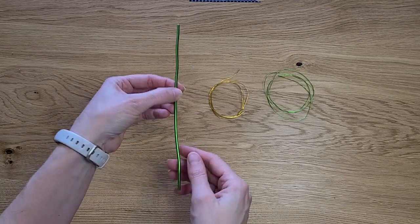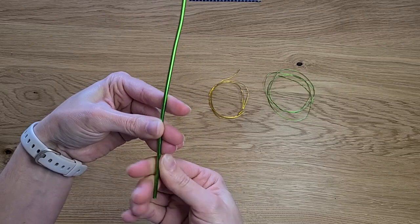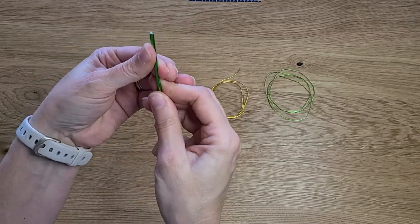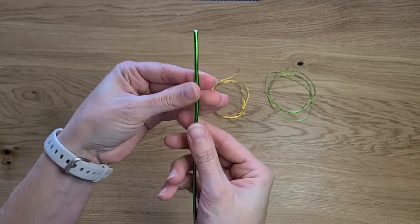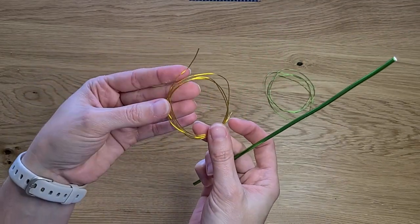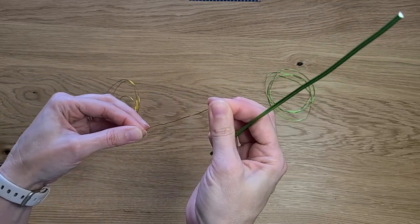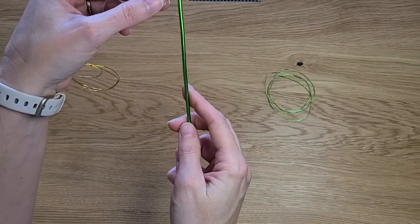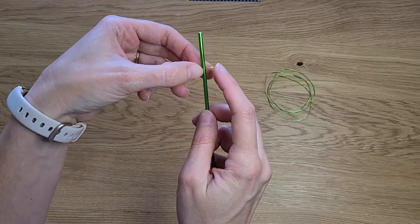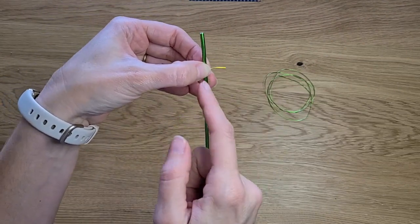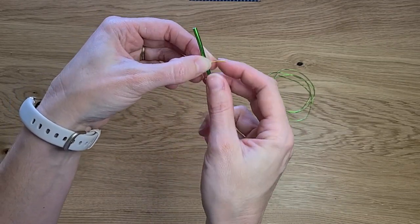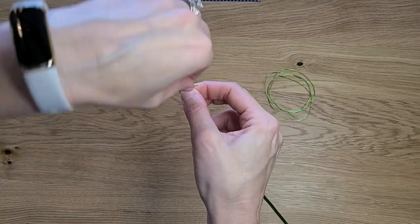So you're going to take your thicker stem, pick one of your ends, and then take your golden yellow wire. I like to go about an inch-ish down. I want you to leave just a small amount of the end of your wire sticking out, and then you're going to start wrapping.